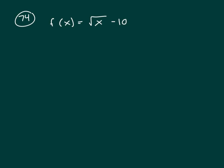We're given this f of x equals square root of x minus 10, and I'm also given u equals f of t.